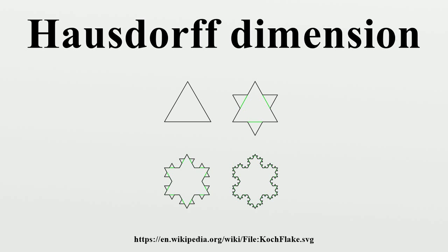Behavior under unions and products: If the space is a finite or countable union, this can be verified directly from the definition. If X and Y are non-empty metric spaces, then the Hausdorff dimension of their product satisfies a known inequality, which can be strict — it is possible to find two sets of dimension 0 whose product has dimension 1. When X and Y are Borel subsets of R^n, the Hausdorff dimension of X × Y is bounded above by the Hausdorff dimension of X plus the upper packing dimension of Y.